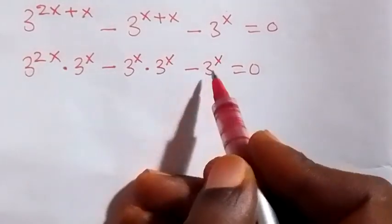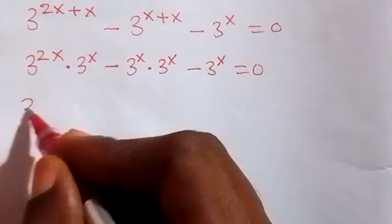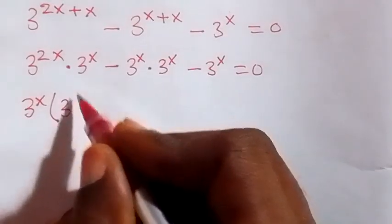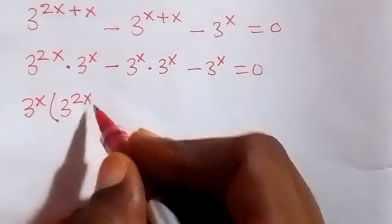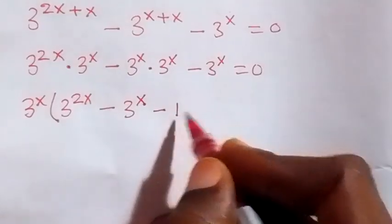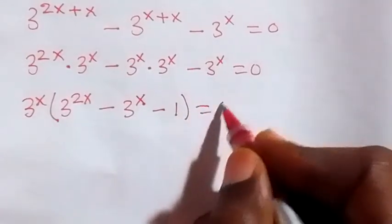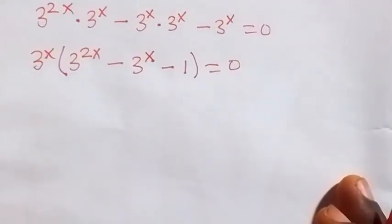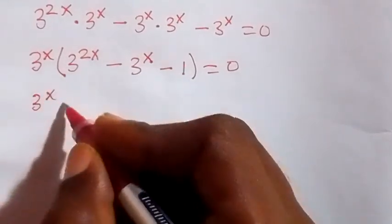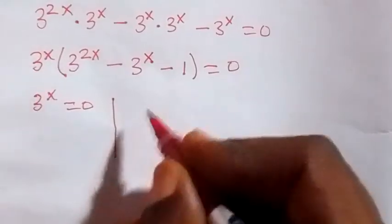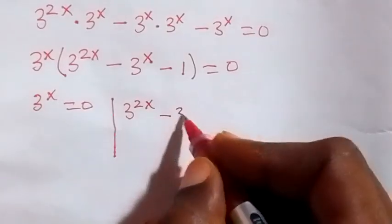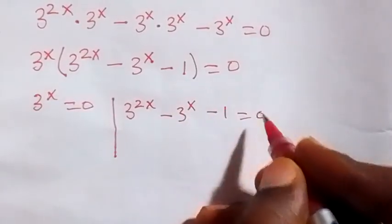In the next step, 3 raised to power x is common here, so let's factor it out. This will be 3 raised to power x out, then in brackets: 3 raised to power 2x left here, then minus 3 raised to power x left here, then minus 1 left here, equals to 0. From here we have 3 raised to power x times (3 raised to power 2x minus 3 raised to power x minus 1) equals to 0.